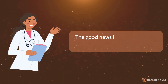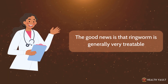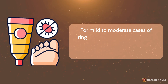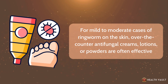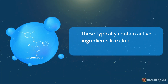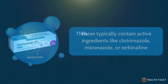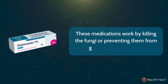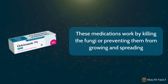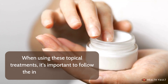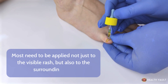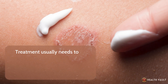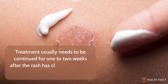Treatment for ringworm: The good news is that ringworm is generally very treatable. For mild to moderate cases on the skin, over-the-counter antifungal creams, lotions, or powders are often effective. These typically contain active ingredients like clotrimazole, miconazole, or terbinafine. These medications work by killing the fungi or preventing them from growing and spreading. When using topical treatments, it's important to apply them not just to the visible rash but also to the surrounding area. Treatment usually needs to be continued for one to two weeks after the rash has cleared to ensure all the fungi are eliminated.